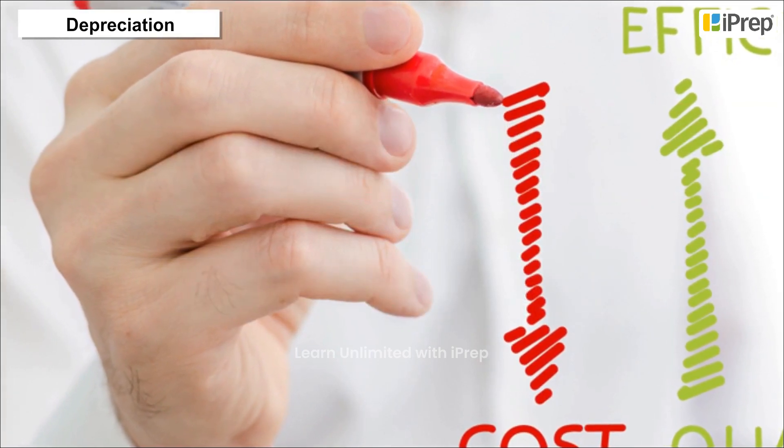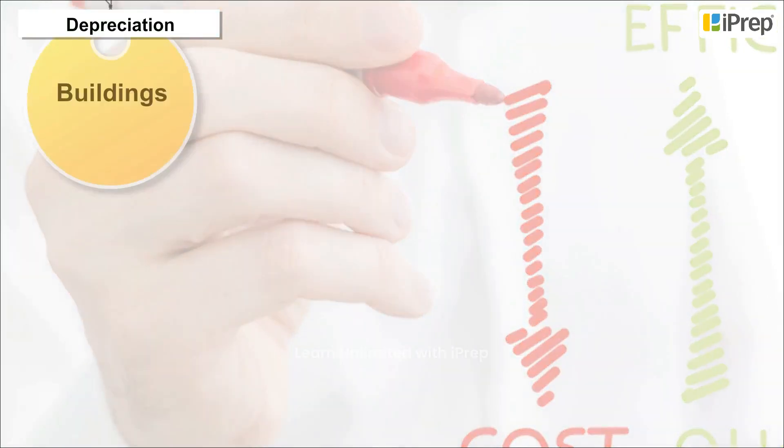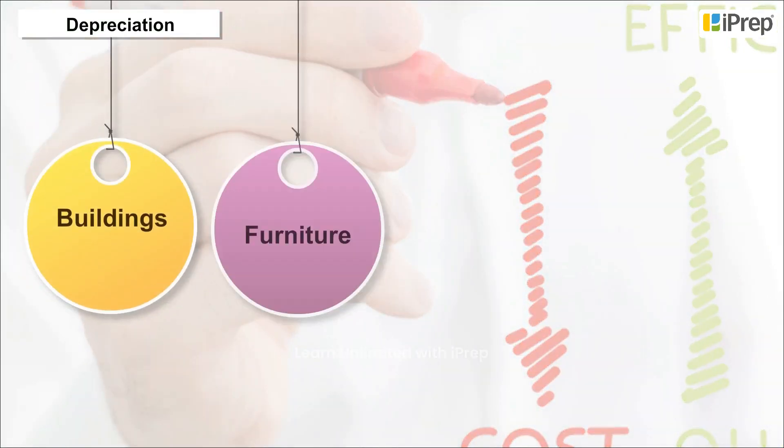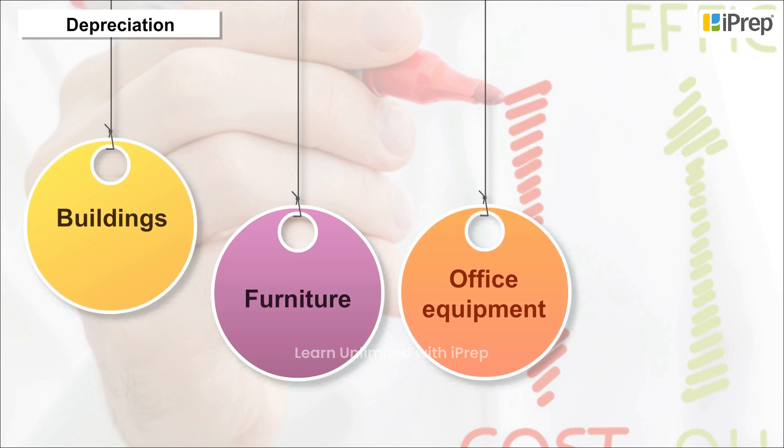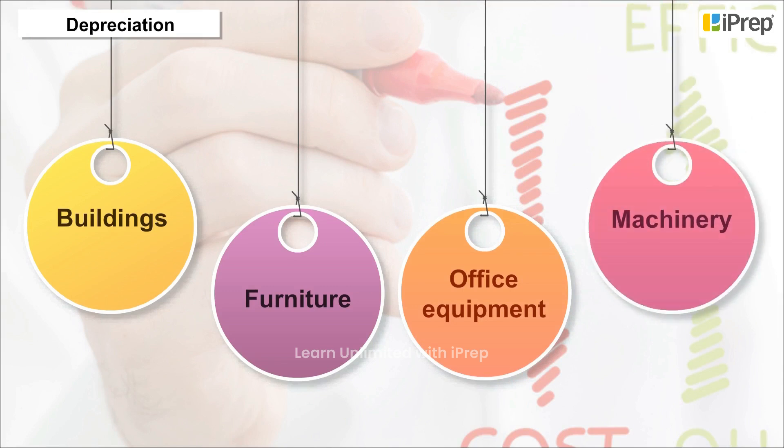Examples of fixed assets include buildings, furniture, office equipment, machinery, etc.